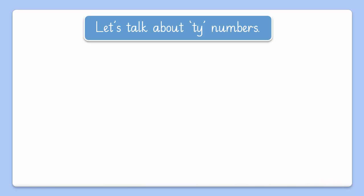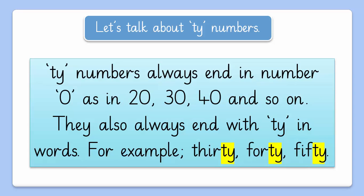Now let's talk about T numbers. T numbers always end in the number 0, as in 20, 30, 40 and so on. They also always end with TY in words. For example, 30, 40 and 50 — as you can see, all these number names have TY at the end.